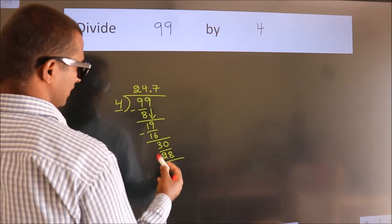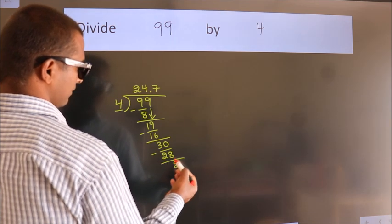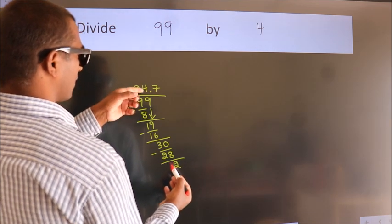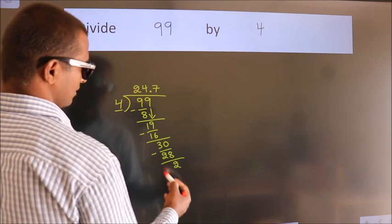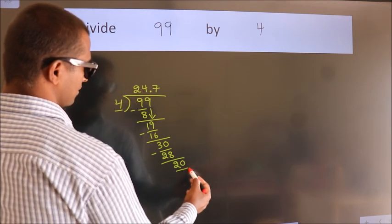Now, we subtract. We get 2. After this, we already have the decimal. So, directly take 0. So 20.